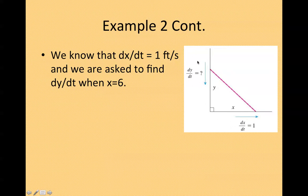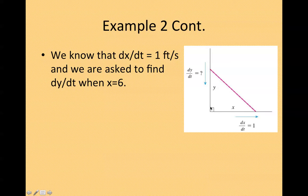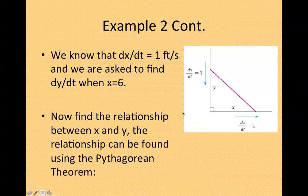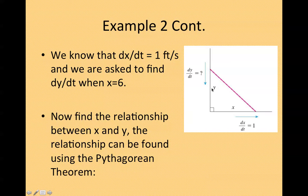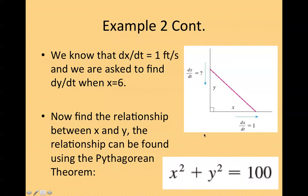So we're trying to find this. What is the rate at which this ladder is going? Now find the relationship between x and y. I can see a relationship here. We know this is 10. Therefore, I can use Pythagorean theorem in this case. So x² + y² = 100, which is 10².